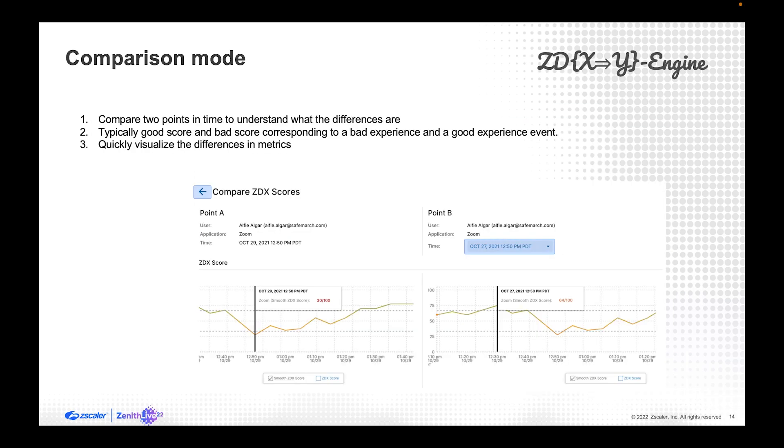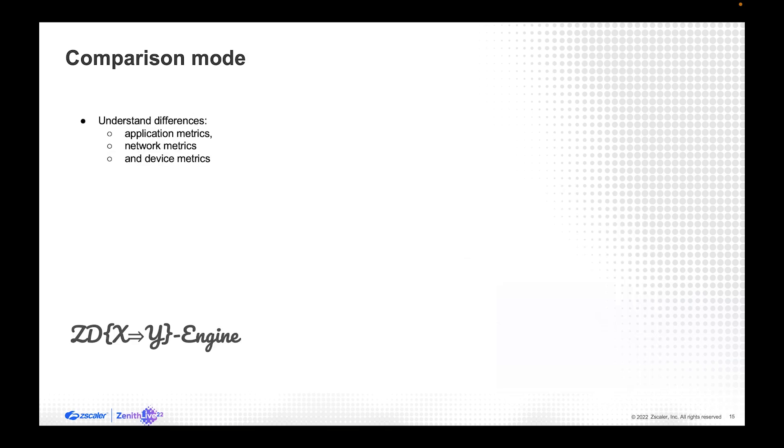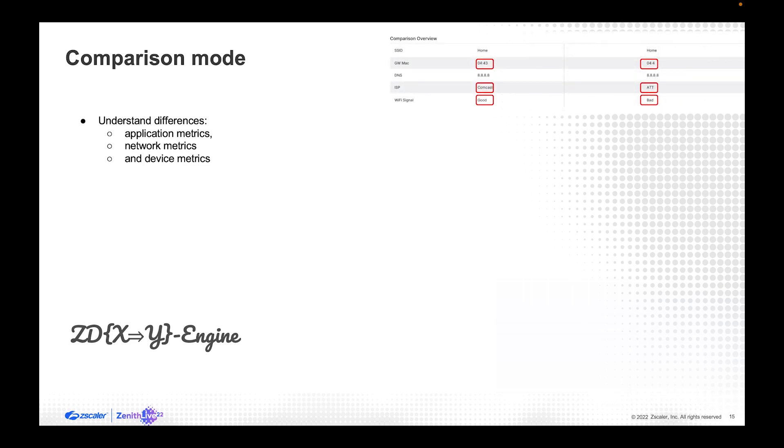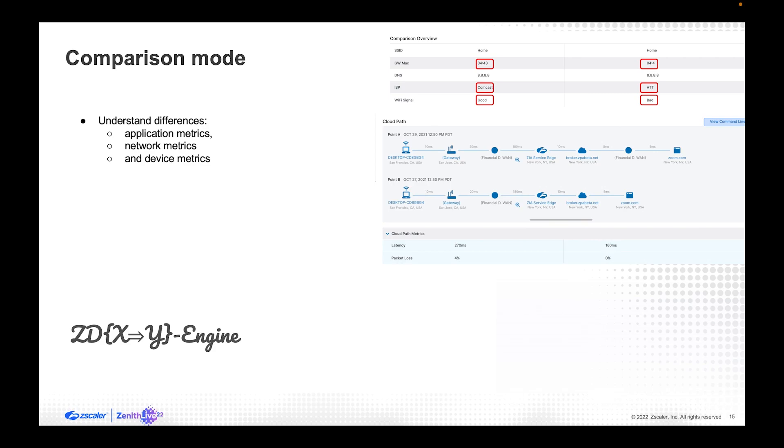The comparison mode, as I said, we can select two points in time through the duration of our data retention. And then the system is going to look at those points and it's going to output what are the differences. It's like a diff mode and we're going to see the differences in the application, in the network and in the device metrics. It's grouped. First, we provide the summary of the main, the most important factors and the differences. We also give you a visualization of both cloud paths, which is going to help us quickly eyeball what is the difference. In this case, it's just before the application. And then we give you all the details and for every metric that we collect what's different.